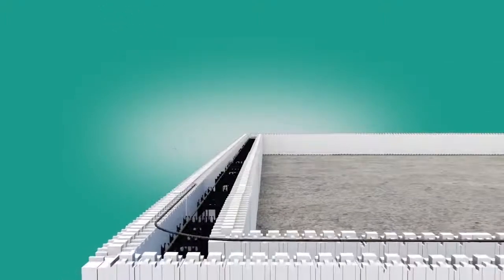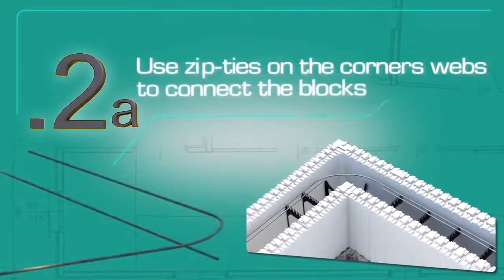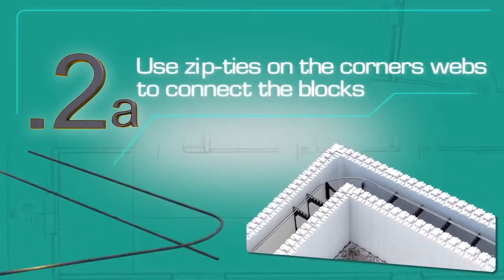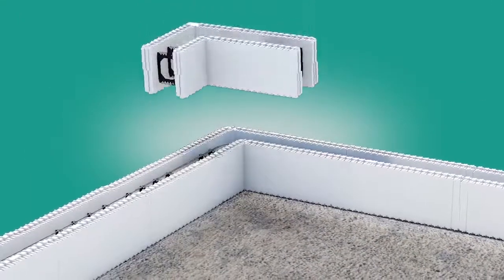Following this, install horizontal rebar by placing it in the clips at the top of the internal webs within the block cavity. The clips hold the rebar securely and eliminate the need for wire tying. Repeat this step for each course of block.